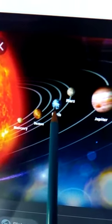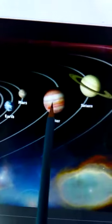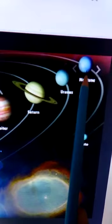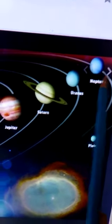First is Mercury, then Venus, Earth, Mars, Jupiter, Saturn, Uranus and Neptune. Neptune is the planet which is very far from the sun.